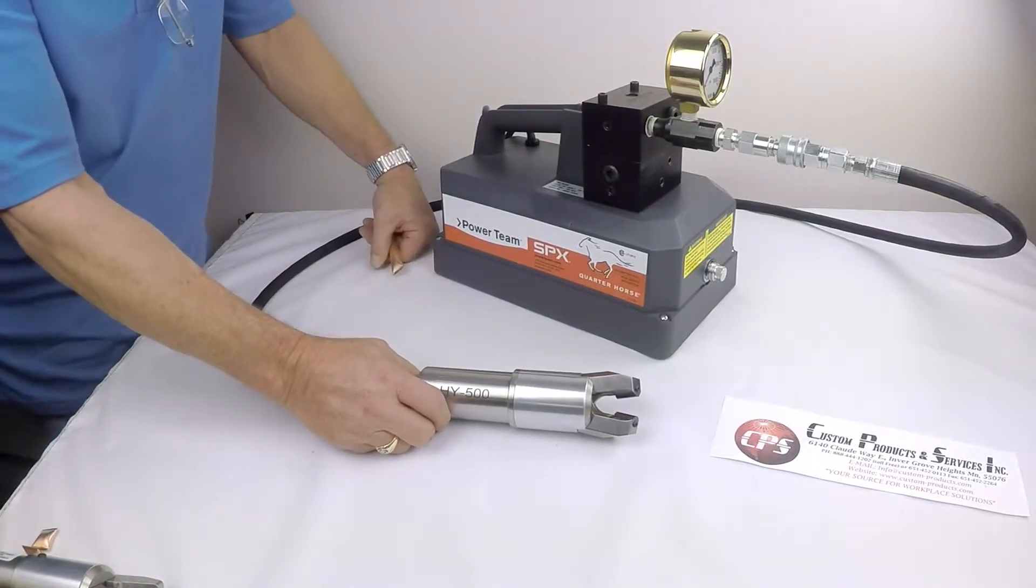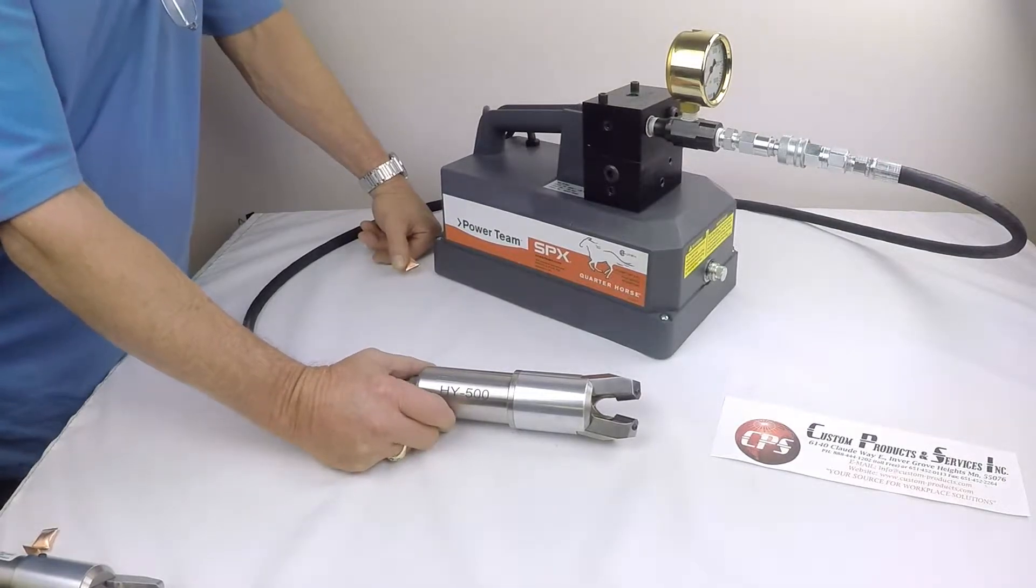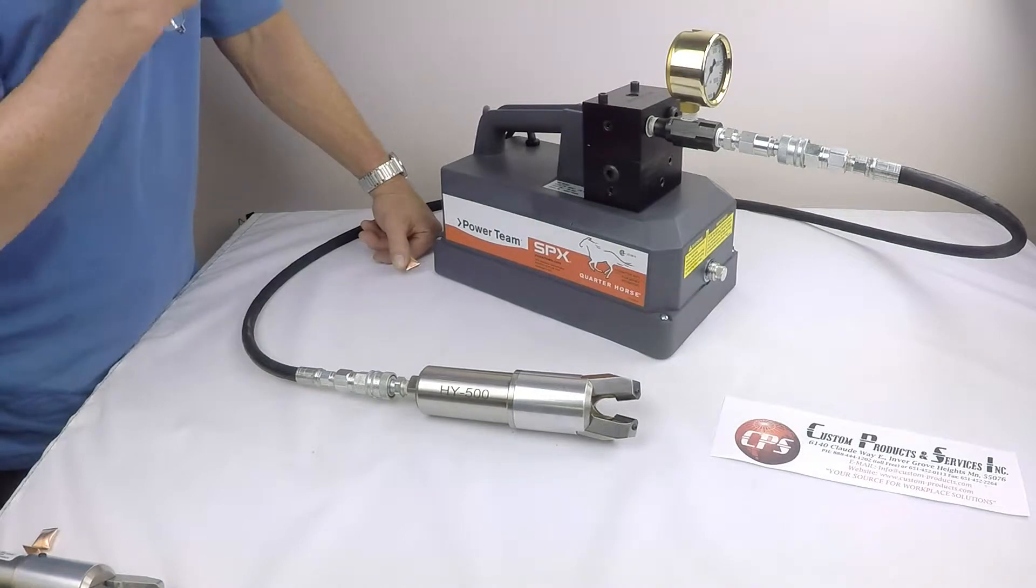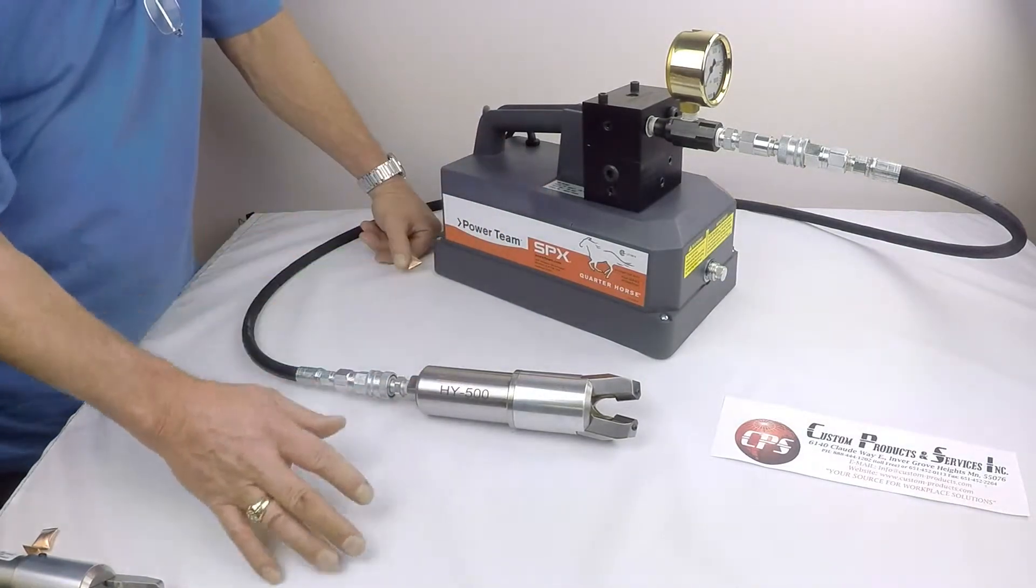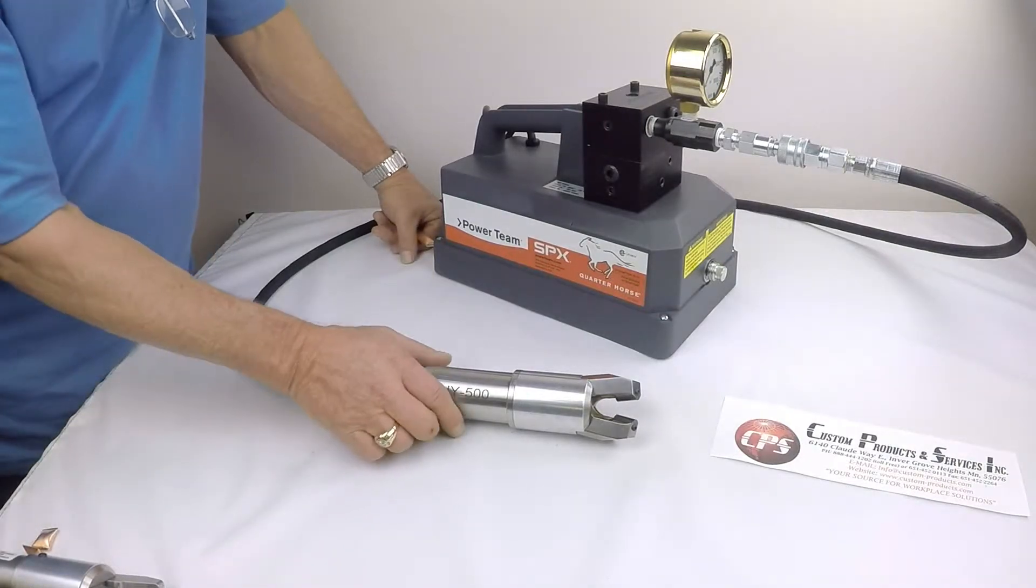This is the HY series hydraulic electric pinch-off tube setup. This particular unit is set up with an electric over hydraulic pump system. It's also available with an air over hydraulic pump system, but this particular one is the electric.